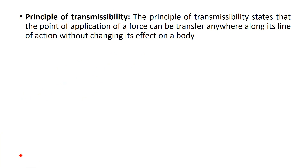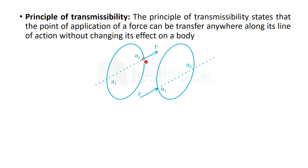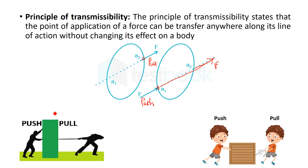For example, here it is F force as push type and here it is F force as pull type, but the effect of force on the body is the same. On this line of action, anywhere you apply F, its effect does not change. You can transfer the force anywhere on its line of action — that is the principle of transmissibility.